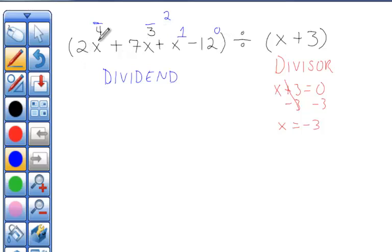So the term for the exponent of 4 is 2. The term for the exponent of 3 is 7. The term for the exponent of 2 is 0 because we're missing that. The term for the exponent of 1 is 1, and the term for exponent of 0 is negative 12.